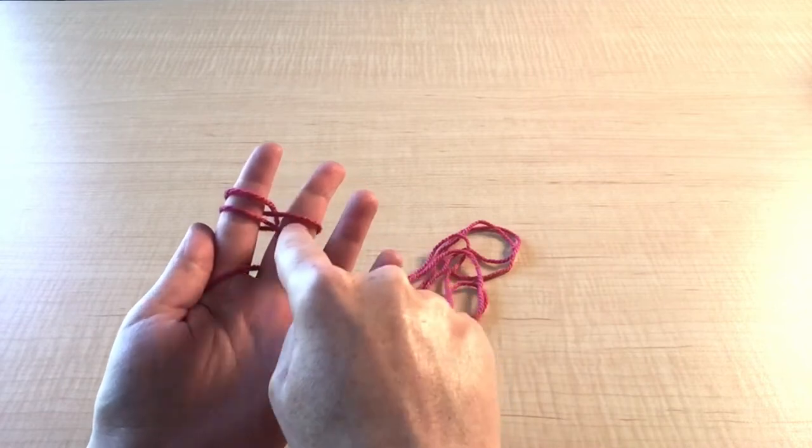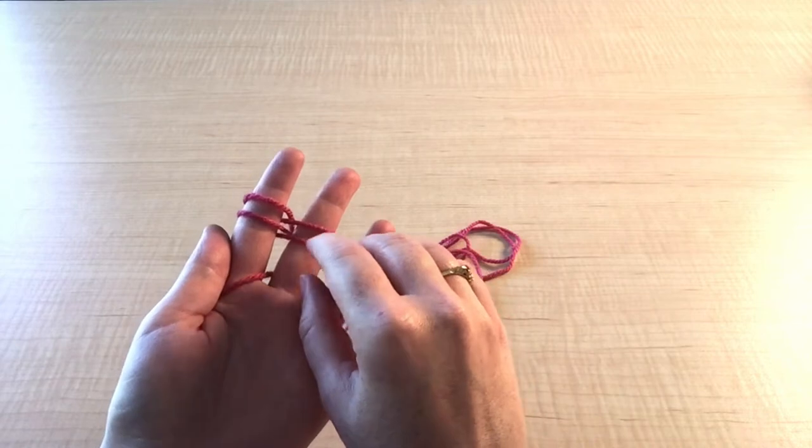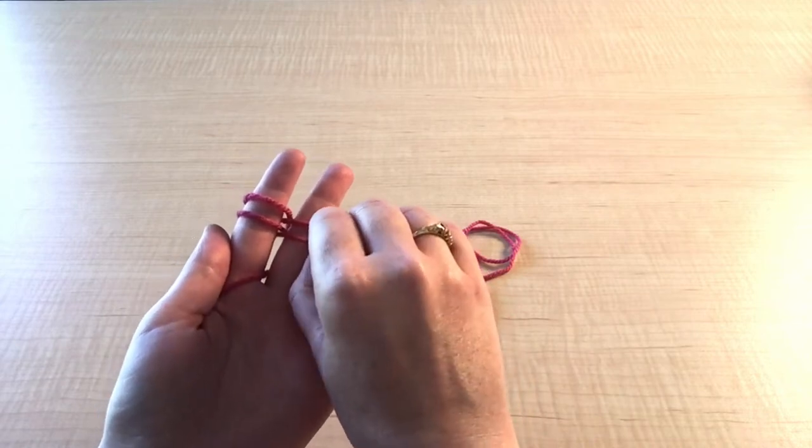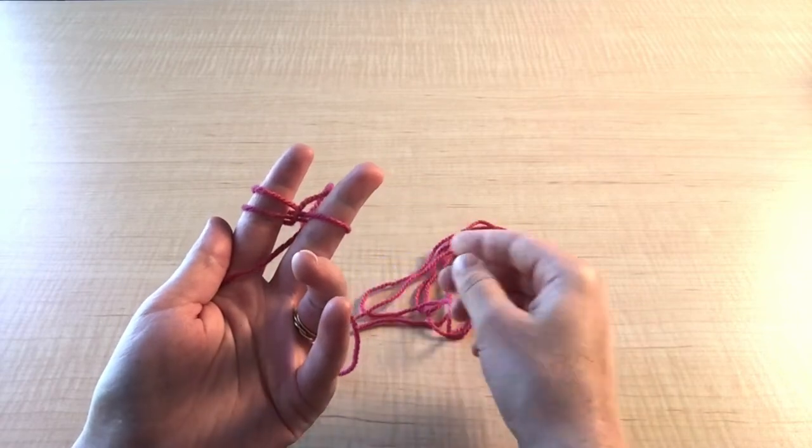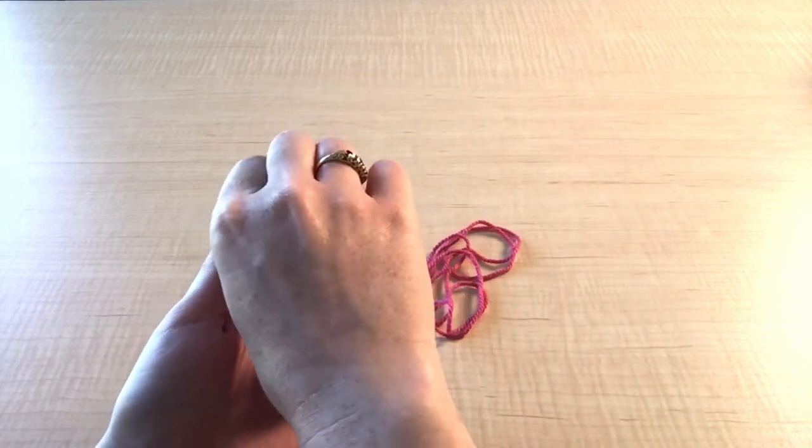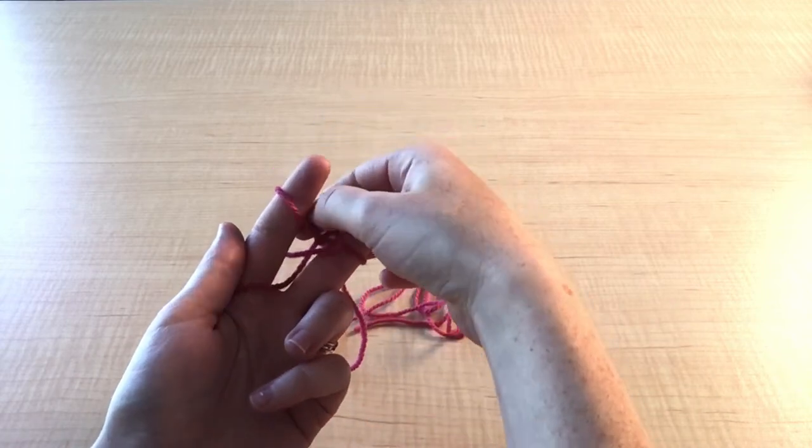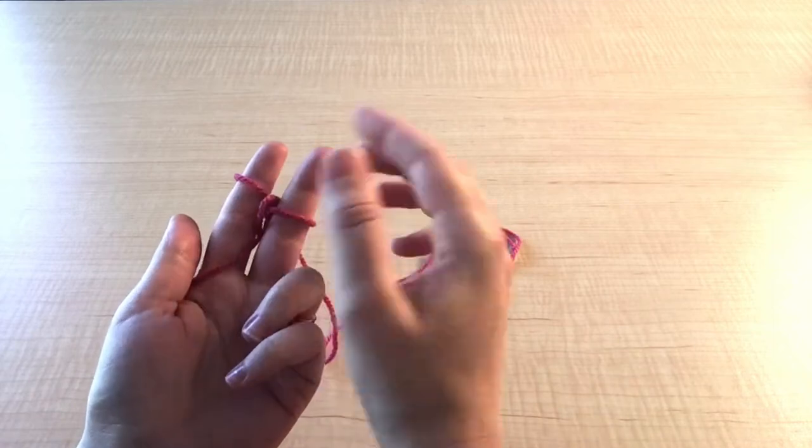Now we have two loops on each finger. Grab the bottom loop on the middle finger and pull it over and off the top loop and off your middle finger. Do the same on your pointer finger. Lift the bottom loop up and over the second loop and off your finger. And now you have your first stitch.